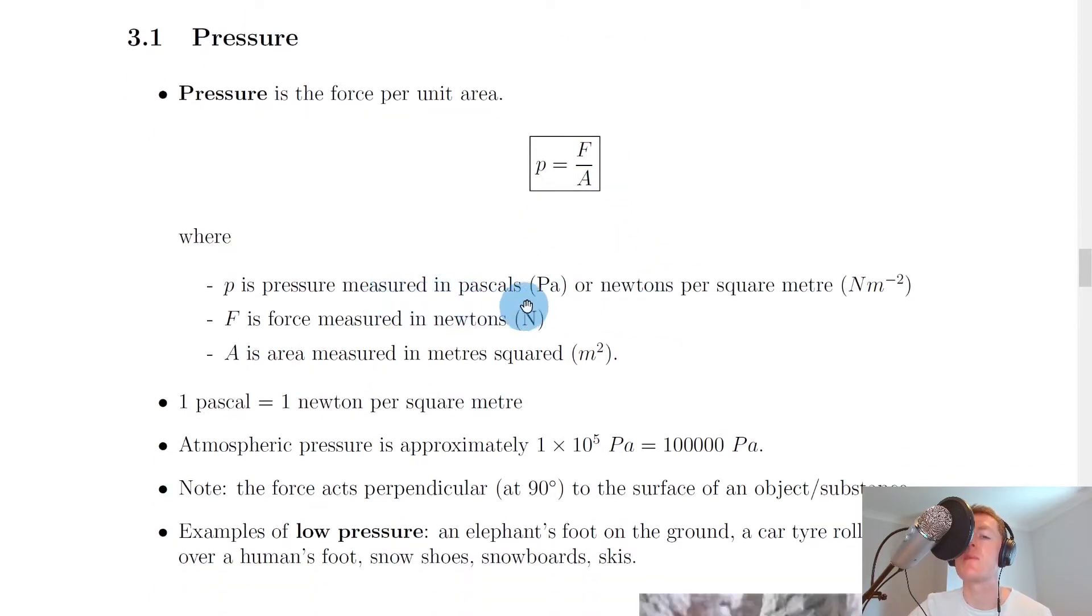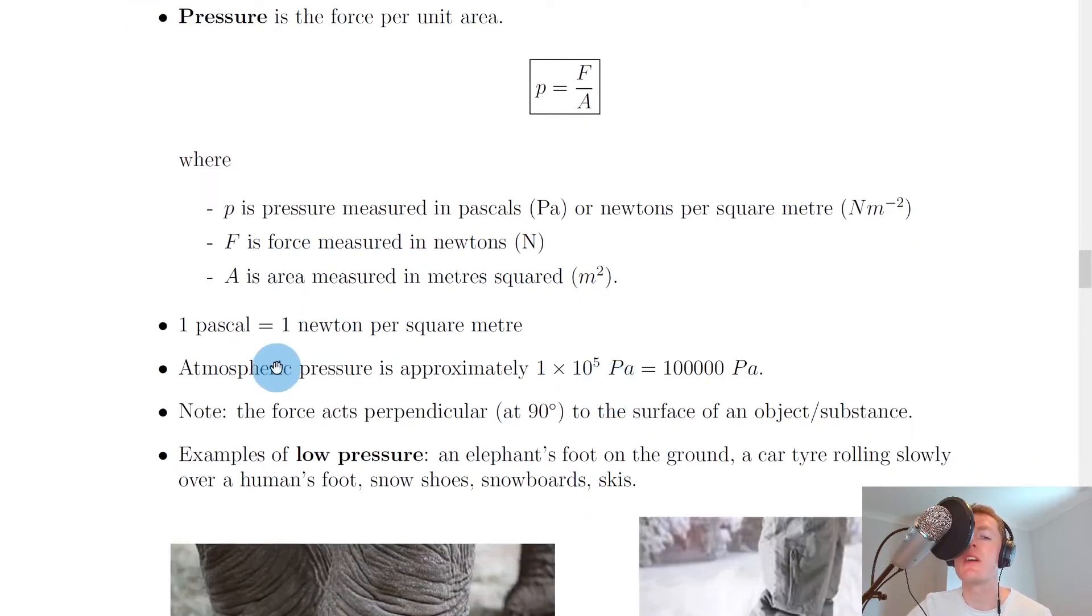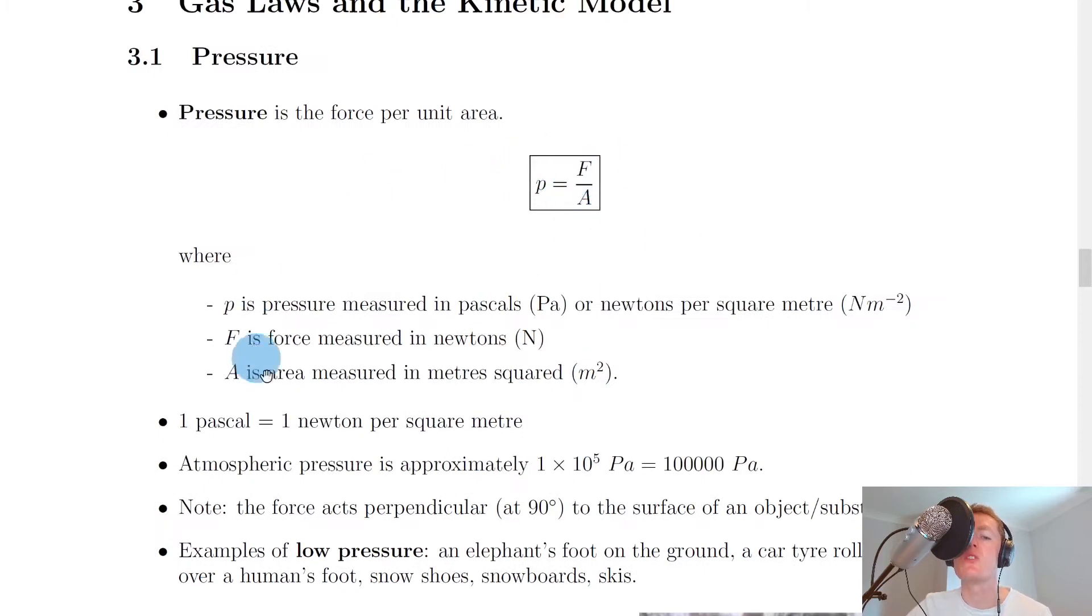Where p is pressure measured in pascals or newtons per square metre, f is force measured in newtons, and a is area measured in metres squared. We can also say that one pascal is equal to one newton per square metre, and this just comes from the equation. This is a typical multiple choice question where they might ask what is one pascal equivalent to.